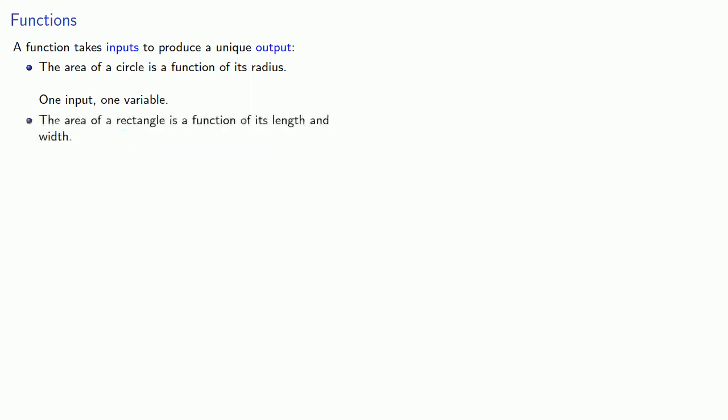Or the area of a rectangle is a function of its length and its width, so here we have two inputs and so this is a two variable function. Or the votes of a politician are a function of their corporate sponsors and here we have several inputs and we have a several variable function.